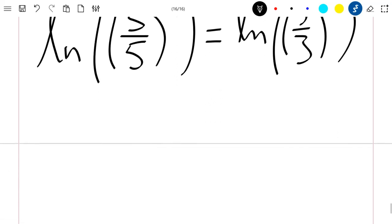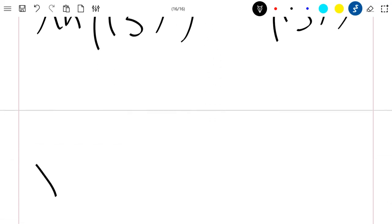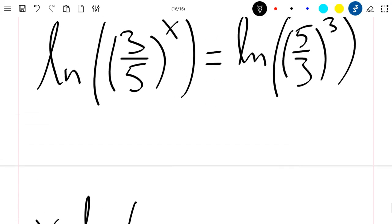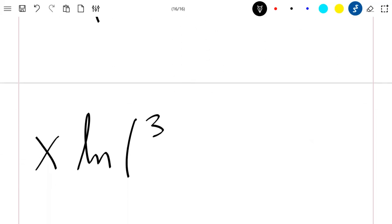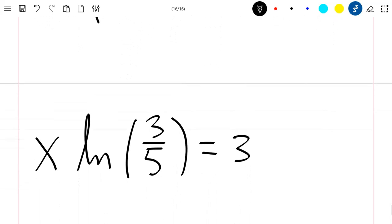We directly come to x ln of 3 divided by 5 equals 3 ln of 5 divided by 3.